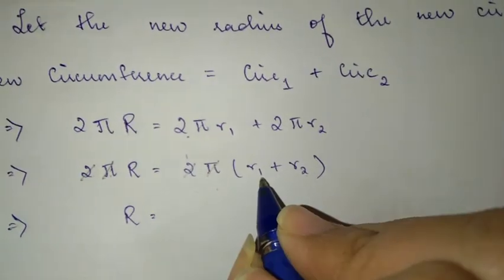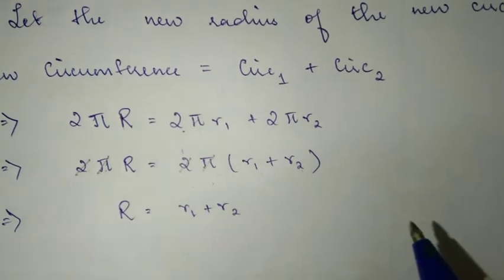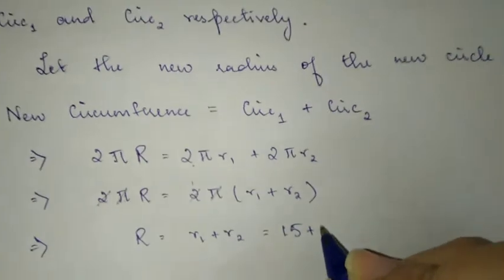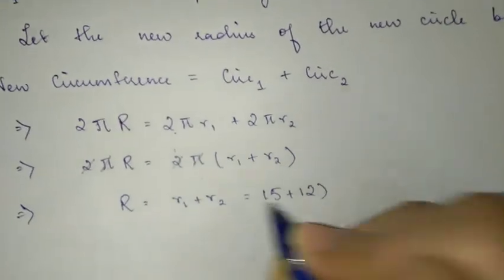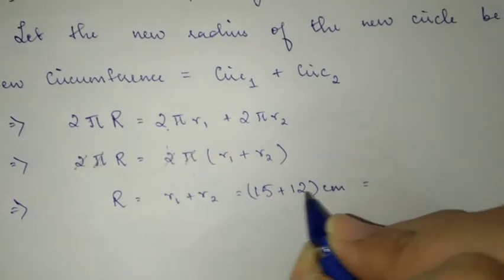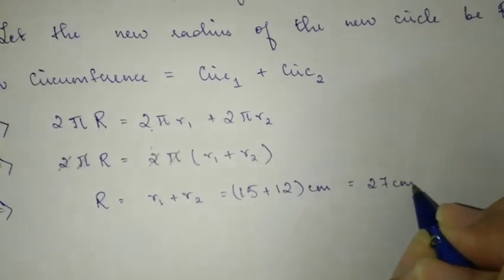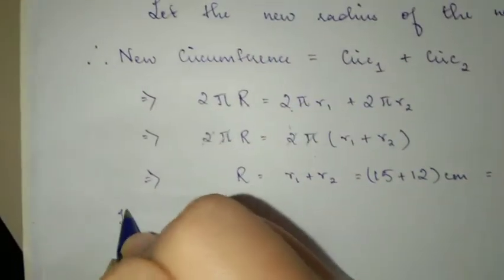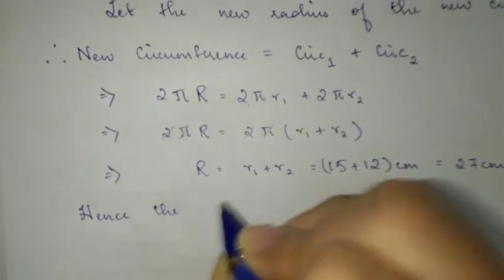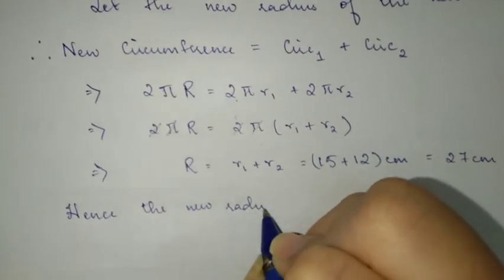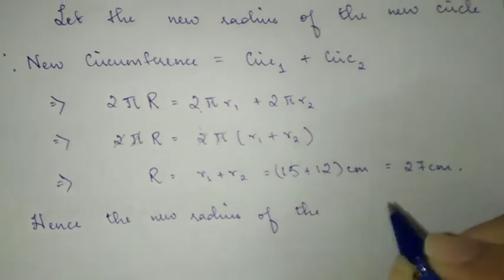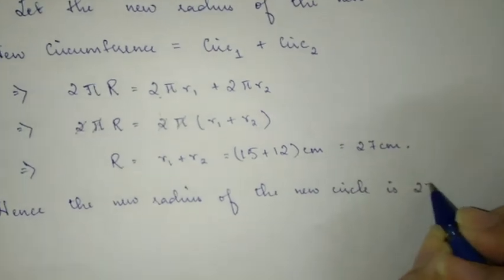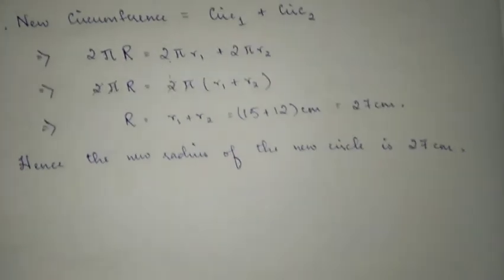So we are left with capital R is equal to R1 plus R2. Now we substitute the values of R1 and R2, which are 15 and 12 centimeters. Adding them up, you get 27 centimeters. This will be the new radius. Hence, the new radius of the new circle is 27 centimeters. This is how you answer it.